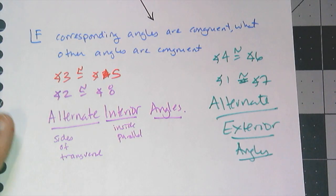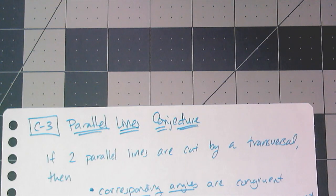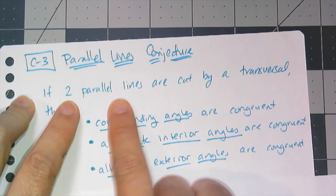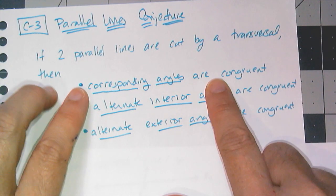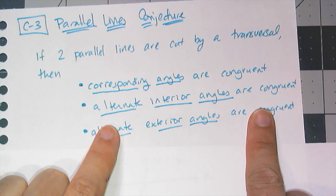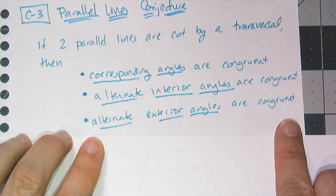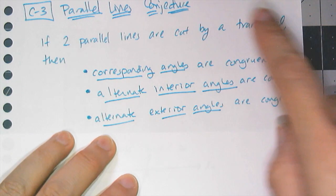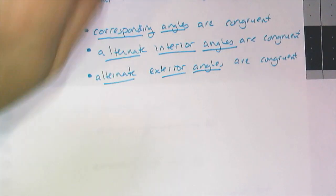With parallel lines cut by a transversal, we get a ton of sets of congruent angles. This gives us a three-part conjecture — C3, called the Parallel Lines Conjecture. If two parallel lines are cut by a transversal, then each of the following must be true: corresponding angles are congruent, alternate interior angles are congruent, and alternate exterior angles are also congruent. Write these down — this is super important and there's a lot to keep track of, but with practice it'll start to become something you notice immediately whenever you see parallel lines.